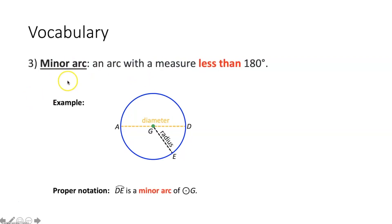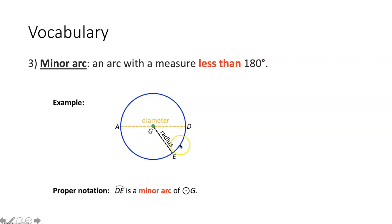A minor arc would be an arc with a measure less than 180 degrees. There are 360 degrees in a circle, meaning that there would be 180 degrees in a semicircle, or half of a circle. So if a given arc is less than half of a circle — for instance, arc DE right here — we would know that arc would be considered a minor arc because its measure would be less than 180 degrees.